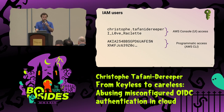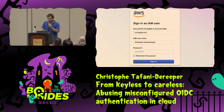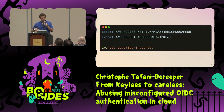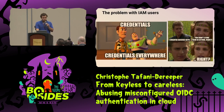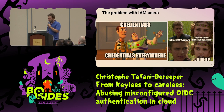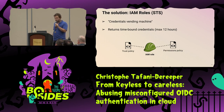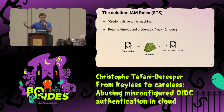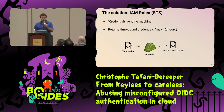You can sign in to the console with your username and password, and use your access key ID and secret key for the CLI. The problem with that is these credentials never expire. When you look at cloud data breaches over the past 10 years, most of them are caused by leaked IAM credentials. The solution AWS came up with is IAM roles — basically a credentials vending machine. You ask for credentials for a role, and you get back temporary credentials. A role has two things: a trust policy, which defines who can get credentials for that role, and a permissions policy, which defines what permissions the role has.